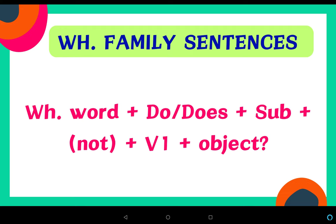Next are WH family sentences — sentences where a WH word is used, such as what (क्या), where (कहाँ), when (कब), why (क्यों), and so on. The structure is: WH word + Do/Does + Subject + (not) + V1 + Object. If the sentence is negative, 'not' is added; otherwise it is not.